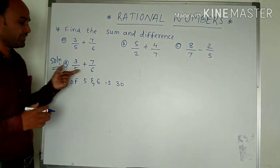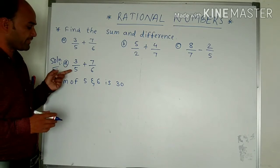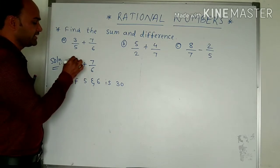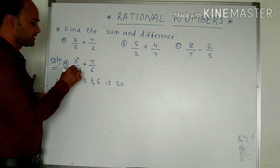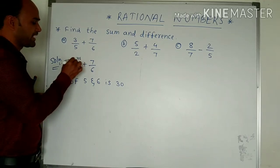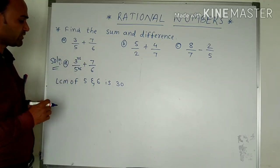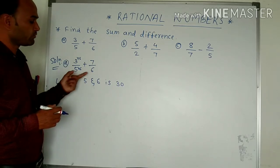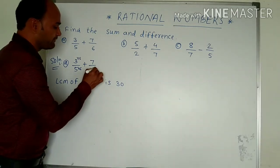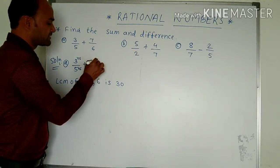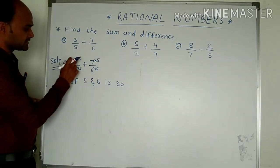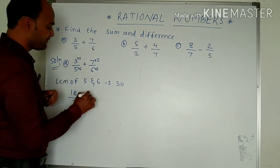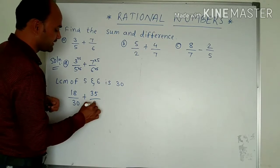We have to make both denominators become 30. For making 5 become 30, we have to multiply by 6: 5 times 6 is 30. If we are multiplying by 6 at the denominator, we have to multiply 6 at the numerator also. For the second fraction, we have to make 6 become 30, so we multiply 6 by 5. So 3 times 6 is 18, divided by 30, plus 7 times 5 is 35, divided by 30.